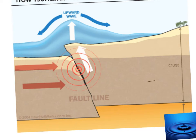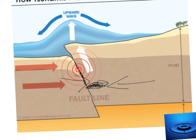So this is how a tsunami starts. First, these two plates are pushing against each other, which causes one plate to suddenly rise up — every so often it does. Then, a huge wave of water will rise up. The wave of water will only rise up if an oceanic plate and a continental plate do it, or two oceanic plates, not two continental plates.